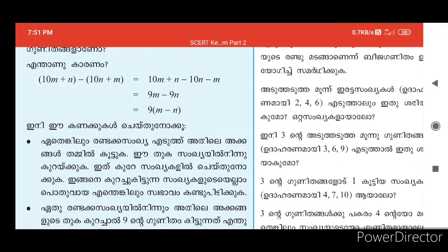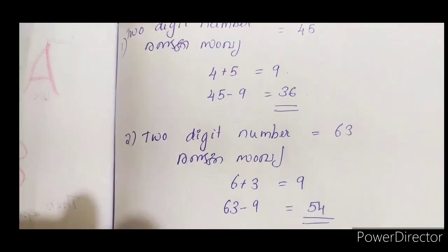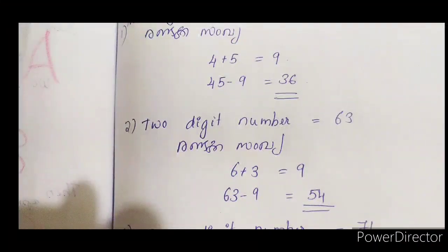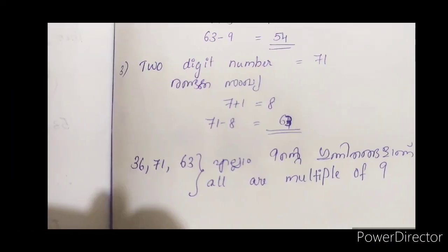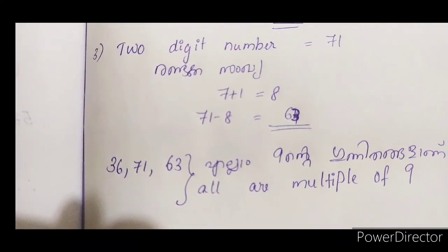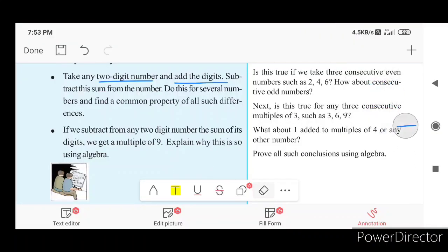Now let's take a look at a 2-digit number. The digit sum: 4 plus 5 is 9, 5 plus 4 is 9, 6 plus 3 is 9, 7 plus 2 is 9, 8 plus 1 is 9. If we subtract any 2-digit number from the sum of its digits, we get a multiple of 9.